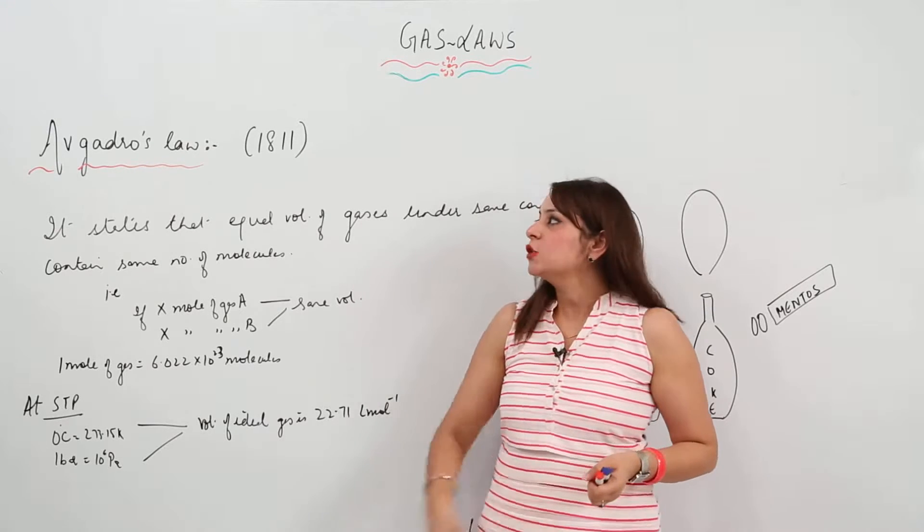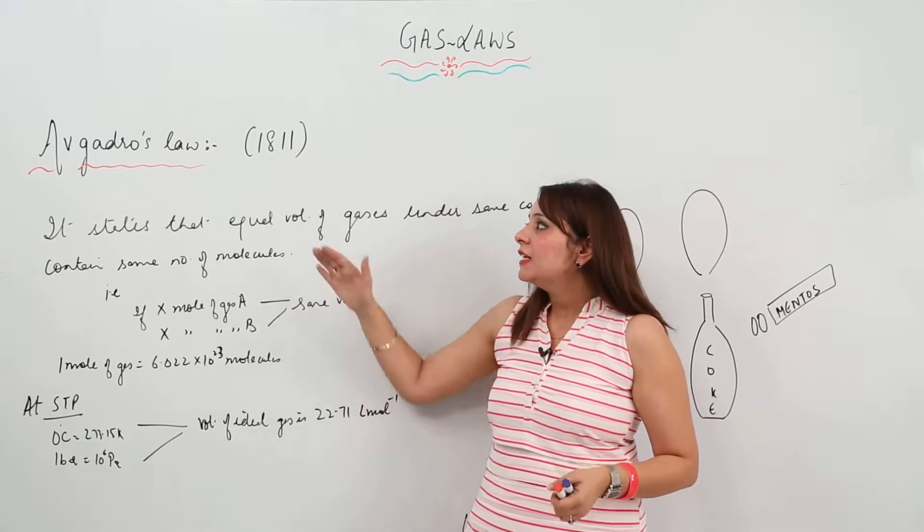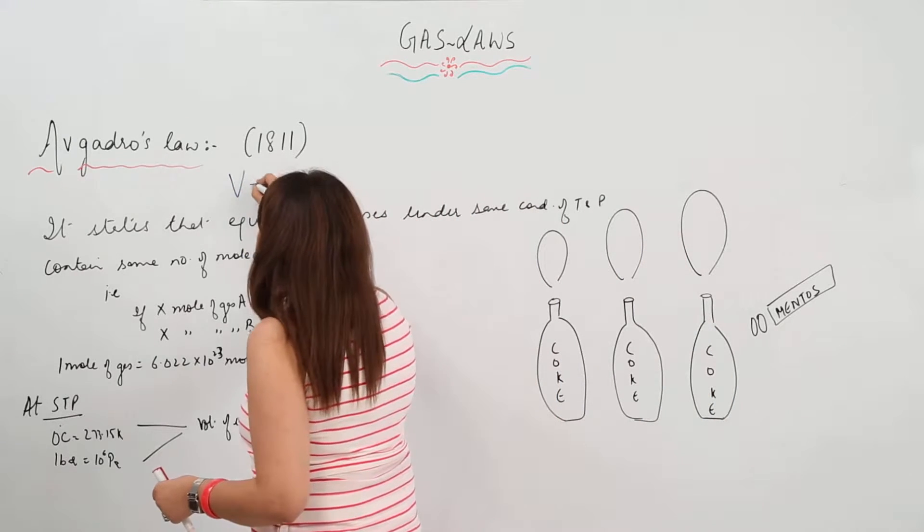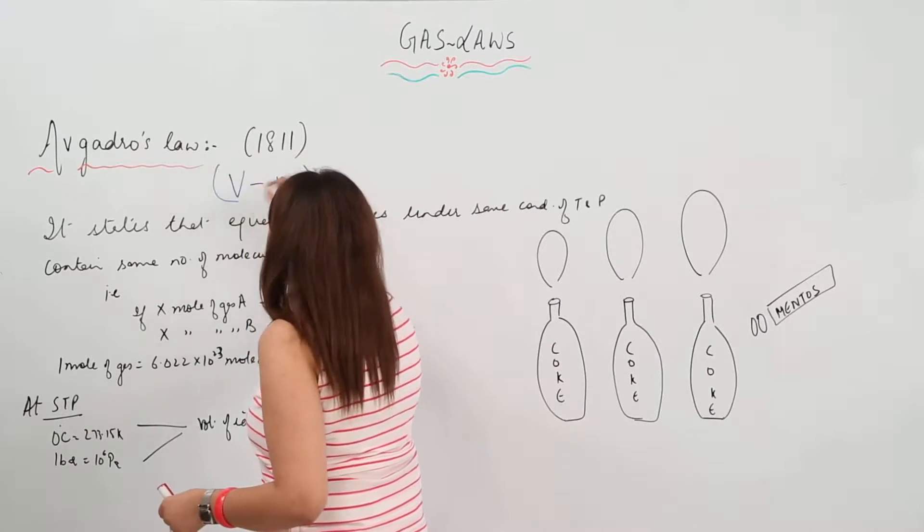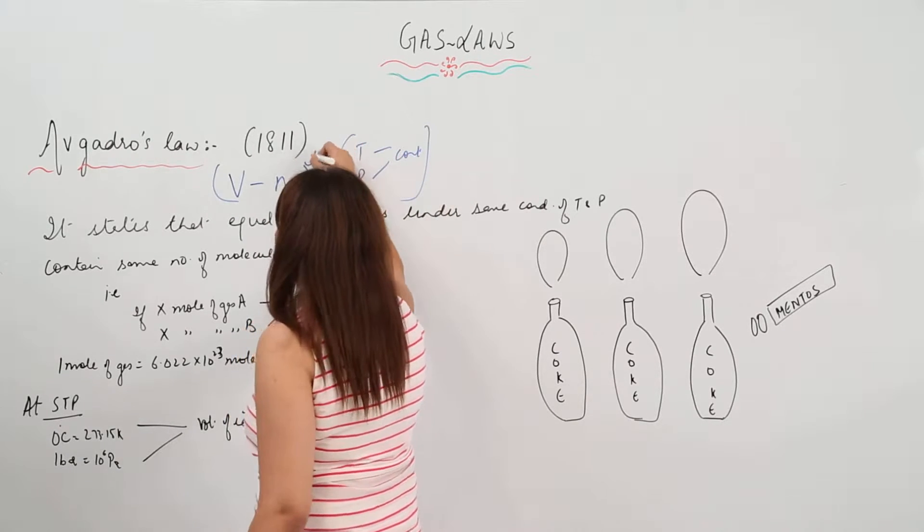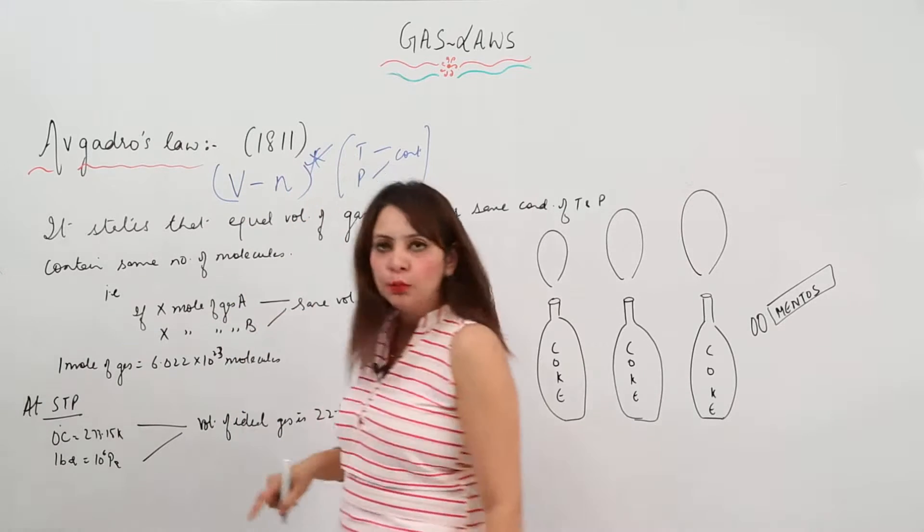Now we are going to start with Avogadro's Law. This law actually gives us the relationship between volume and moles of the gas, keeping temperature and pressure constant. So this is a relationship between volume and moles.